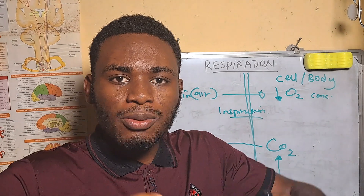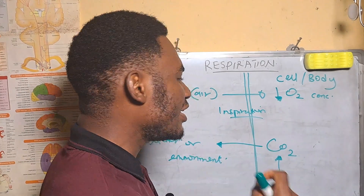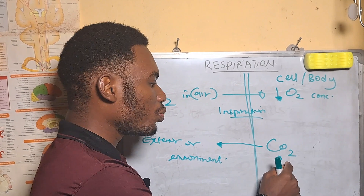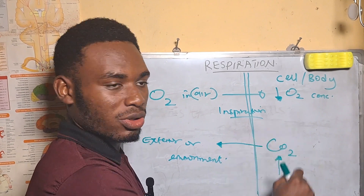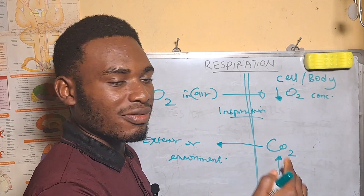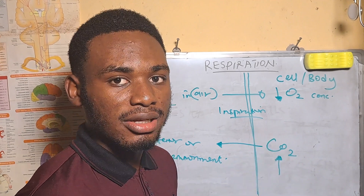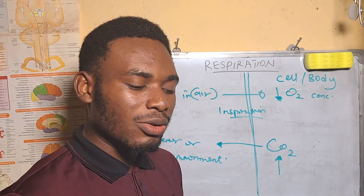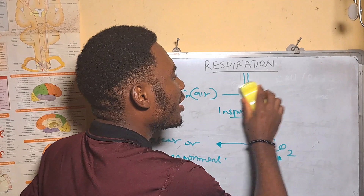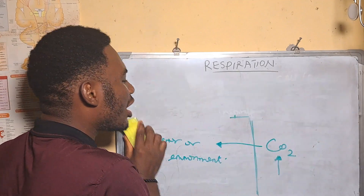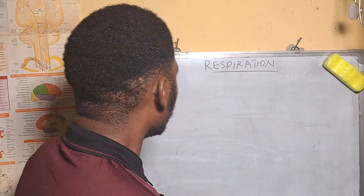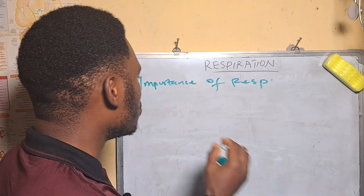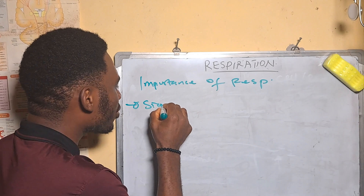Why do living organisms respire? Number one, it creates an avenue to get rid of CO2. CO2 is a metabolite — it's a waste product and it ought to leave the body, because if it doesn't, the body's acid-base balance will be altered. Number two, respiration gives us ATP, the energy currency of the cell, which helps the body carry out many functions.